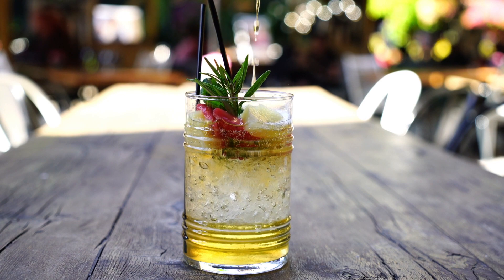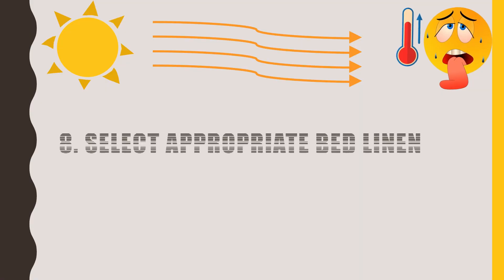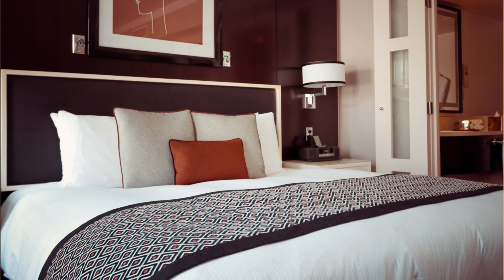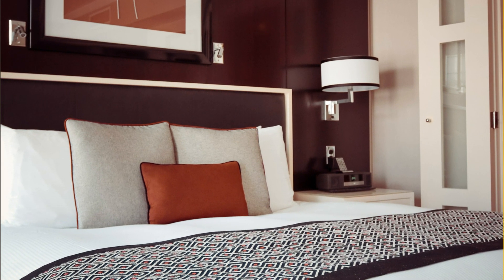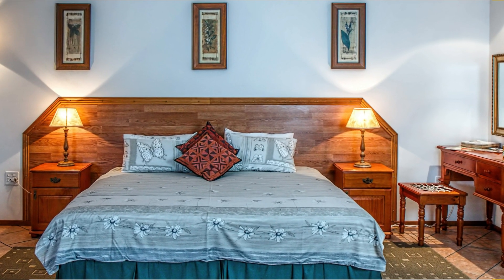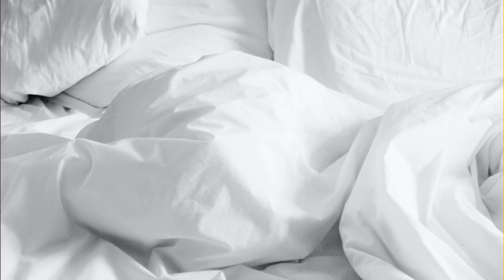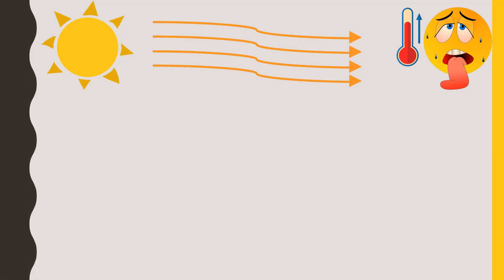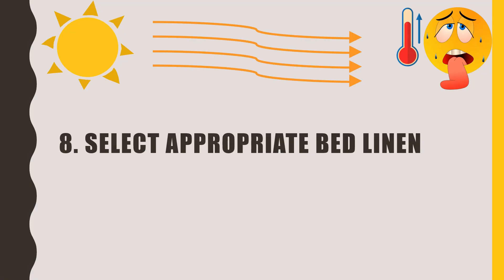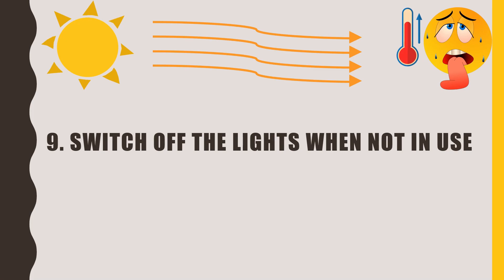Tip number eight is to select appropriate bed linen. If your bed sheet is sateen or synthetic, replace it immediately with cotton or silk, as cotton absorbs sweat and keeps body temperature low. You can also keep your bed sheet and pillowcases in the fridge and use them before going to sleep. Avoid foam mattresses as they retain heat; use cotton mattresses instead, or at least cotton toppers to avoid absorbed heat from foam.